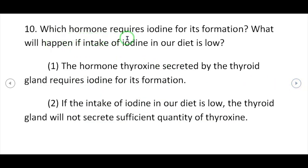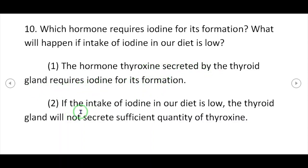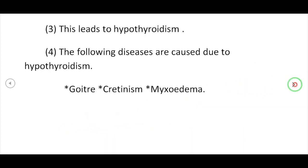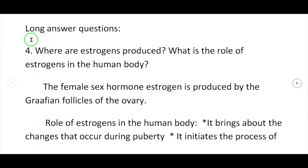Question: Which hormone requires iodine for its formation, and what will happen if intake of iodine in our diet is low? The hormone thyroxine, secreted by the thyroid gland, requires iodine for its formation. If the intake of iodine is low, the thyroid gland cannot secrete sufficient thyroxine, leading to hypothyroidism, causing diseases such as goiter, cretinism and myxedema.